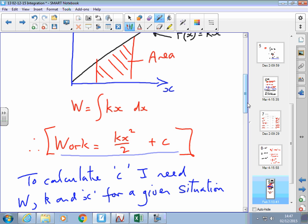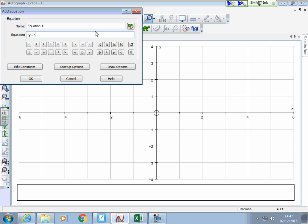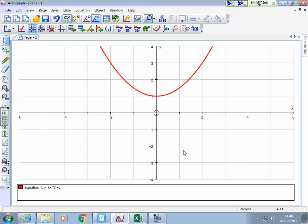The trouble with this formula is I can't use it as it stands because I don't know what c is. So let me just explain what I mean by that in a bit more detail. If I were to plot on an autograph, y equals kx squared over 2 plus c, then I get a curve. That's the function. x squared is telling me it's a quadratic. It's a square.